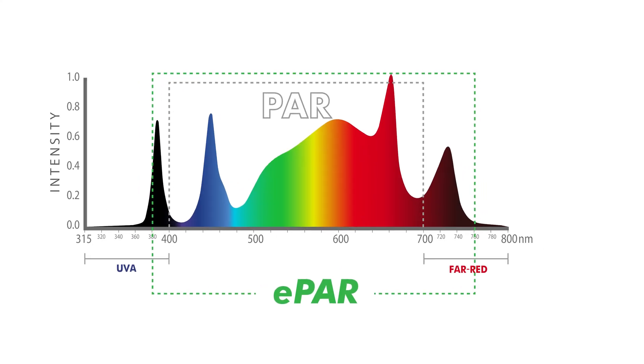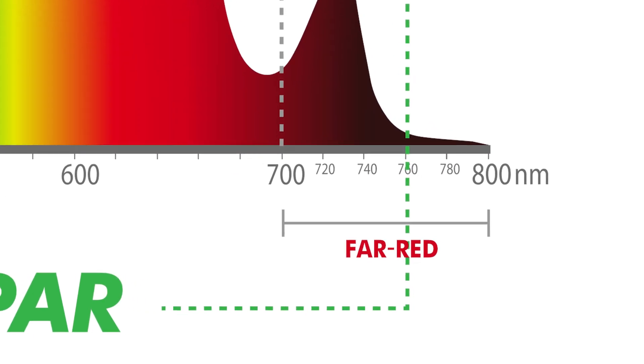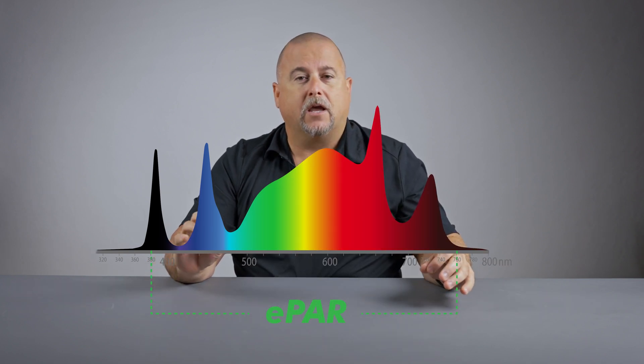At the other end of ePAR is far red. We expand that measurement from 700 nanometers out to 760 nanometers, which includes some red spectrum as well as some infrared spectrum. This gives ePAR a total range from UV at 380 nanometers all the way up to 760 nanometers in the infrared spectrum — a much wider breadth of measurement to increase photon absorption in artificial lighting.